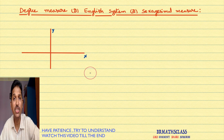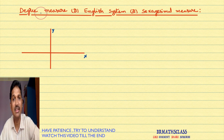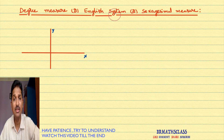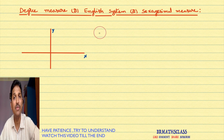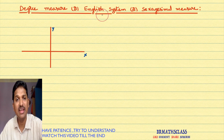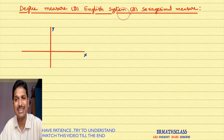We measure angle in three methods. We know one method — that is degree measure. Generally, when we say angle, we say 30 degrees, 45 degrees, 90 degrees, like that. But angle is measured not only in degrees; angle is also measured in radians and in grades. In this class, we will learn about degree measure. This degree measure is also known as the English system, or in some books it is written as the British system. We can also call this degree measure the sexagesimal measure.